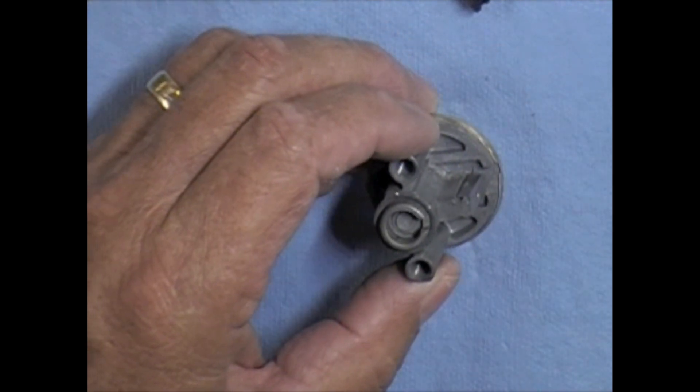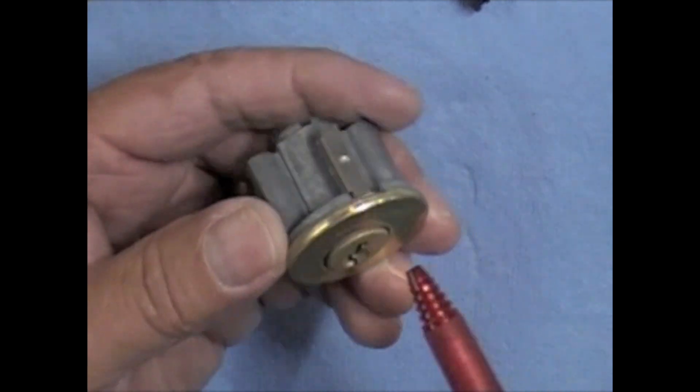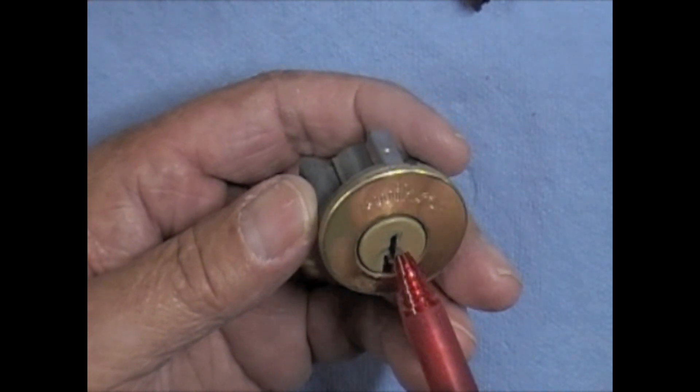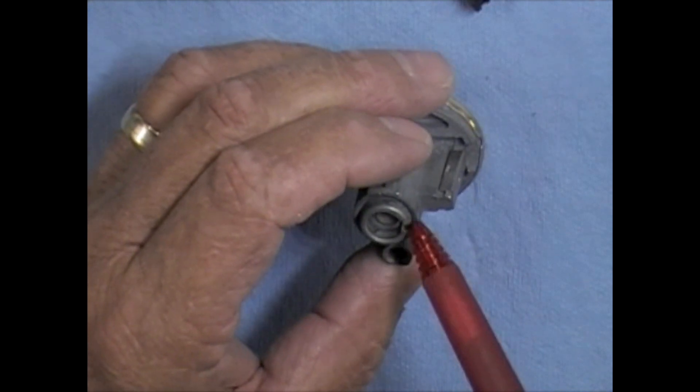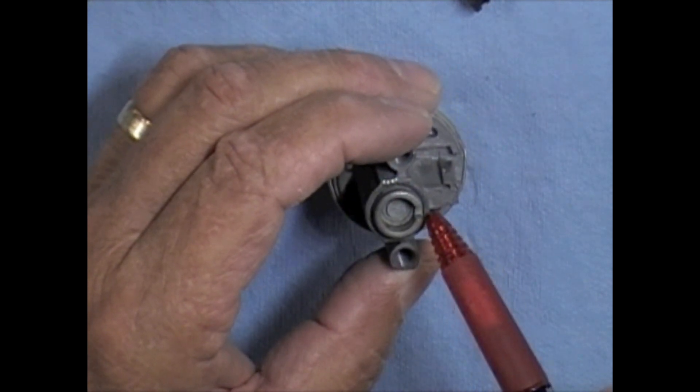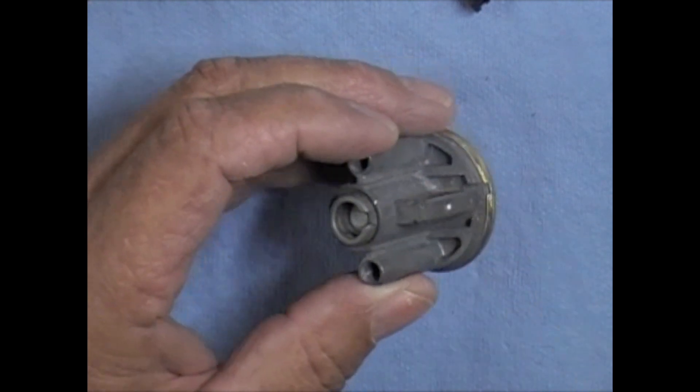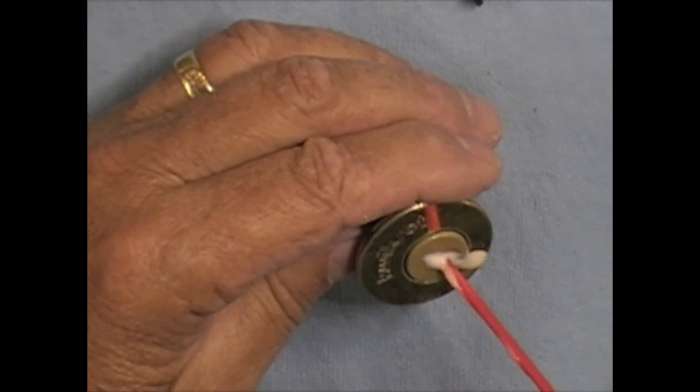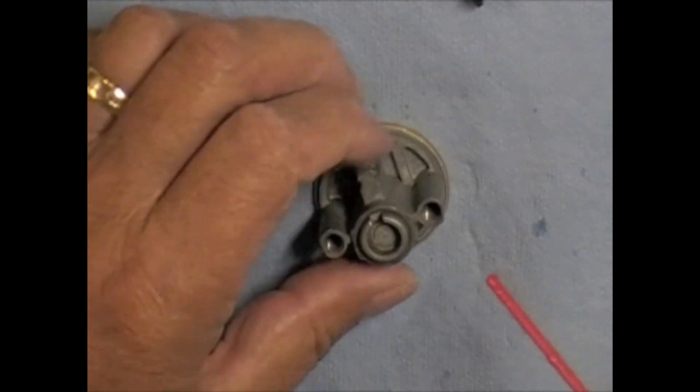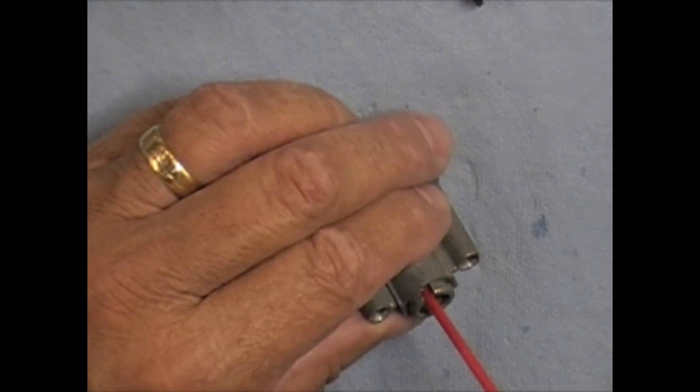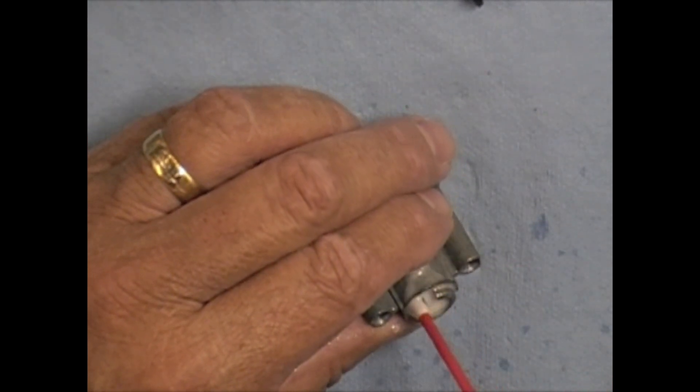Then we're going to want to shoot some WD-40. We can shoot some right in the face of the plug. Might try to shoot a little bit right in the back of the plug, in between the plug and the shell. So we'll put a little shot of WD-40 right into the keyway and then I'm going to just put a little here on the back of the plug.